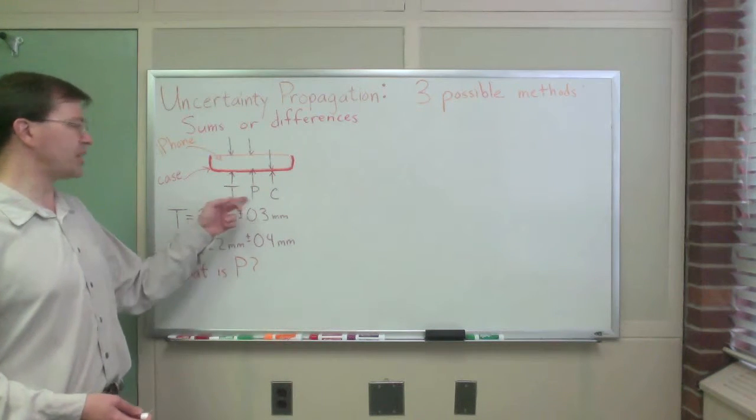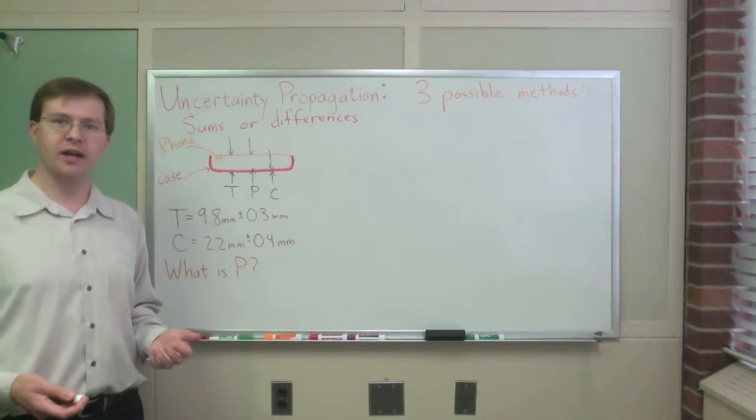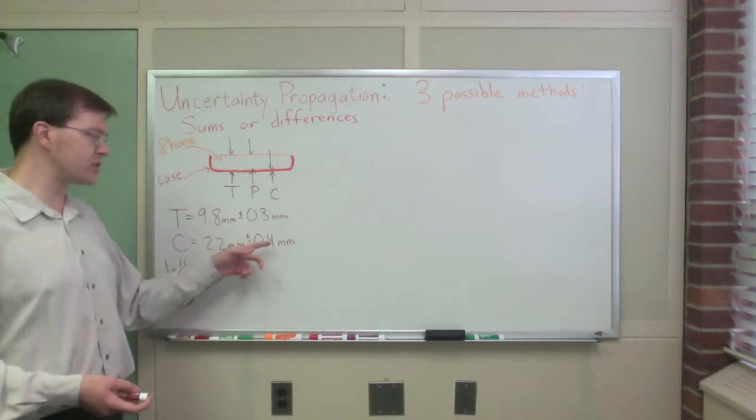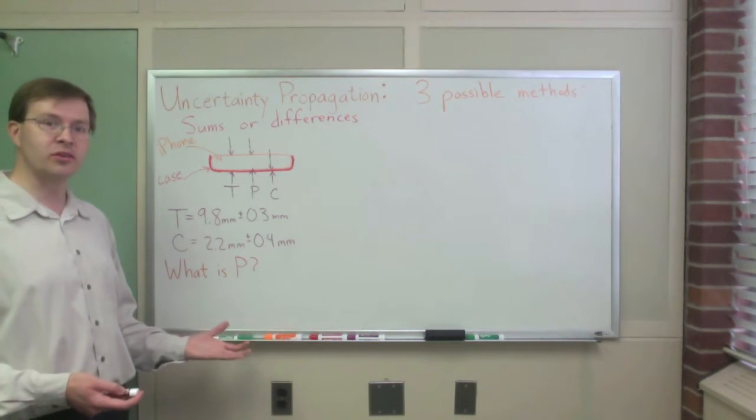I want to know how thick is the phone, how thick is the iPhone itself. And for some reason, I can't be bothered to measure that. So I want to know how these uncertainties will propagate through to give me an answer and an uncertainty in that answer.